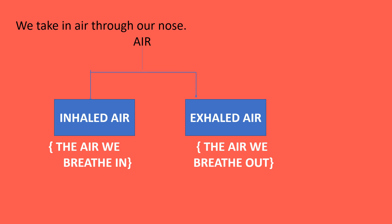The second type is exhaled air. Exhaled air is the air which we breathe out of our body. This air is rich in carbon dioxide. So to summarize: inhaled air is the air which we breathe in and is rich in oxygen, while exhaled air is the air which we breathe out and is rich in carbon dioxide.